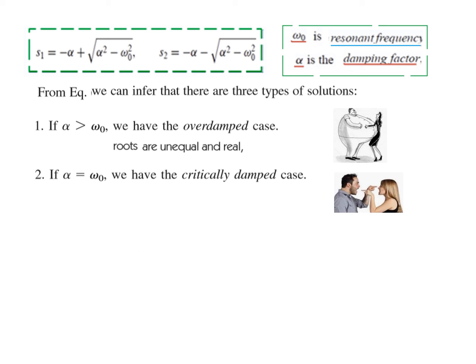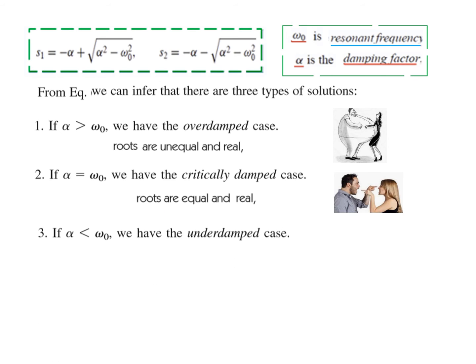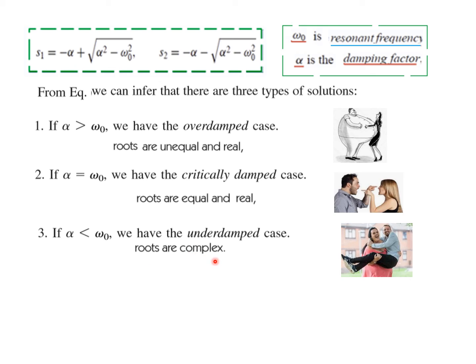The second case is when α = ω₀, called the critically damped case. The term under the radical becomes zero, so both roots are real and equal to −α. The third case is when α < ω₀, an underdamped or oscillating case. Here the term under the radical is negative, producing complex roots of the form −α ± jω_d.